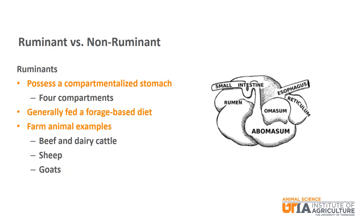You will often hear that ruminants have four stomachs — that is not true. They have one stomach with four compartments: the rumen, reticulum, omasum, and abomasum. Each compartment has a distinct function as it relates to the digestion of ingested feed. Ruminants are generally fed a forage-based diet.